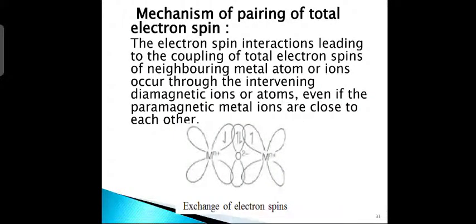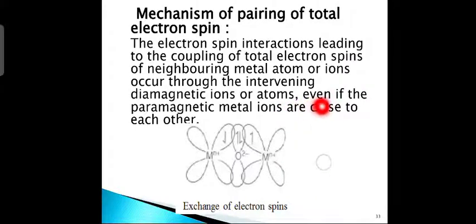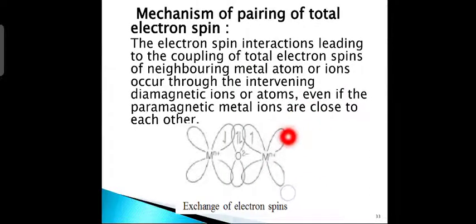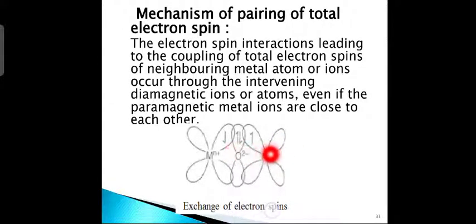Mechanism of pairing of total electron spin. The electron spin interactions leading to the coupling of total electron spins of the neighbouring metal atoms or ions occur through the intervening diamagnetic ions or atoms, even if the paramagnetic metal ions are close to each other. Here is an example of manganese oxide, showing the exchange of electron spins taking place between manganese and oxygen.